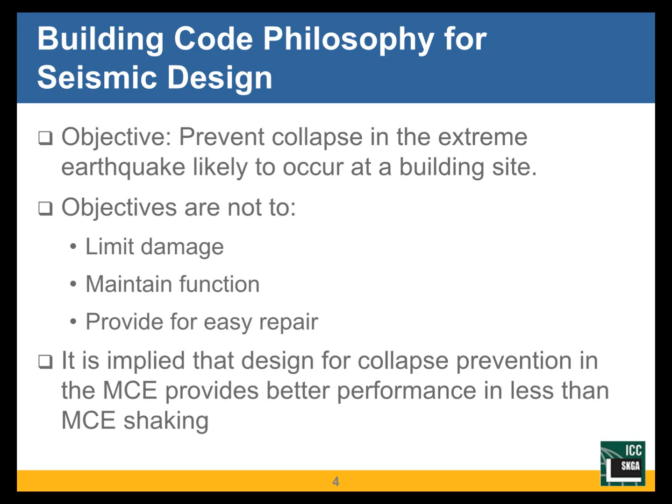Before we begin, I'd like to take a quick look at the big picture view of seismic design. The intention of the International Building Code today, for the vast majority of buildings not designed with performance-based requirements or special systems, is that those buildings are designed just to meet the minimum IBC code requirements. Those requirements target an objective of collapse prevention in the extreme earthquake — known as the maximum considered earthquake — with a risk adjustment. The objectives are really not to limit damage, maintain function, or provide for easy repair.